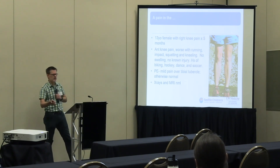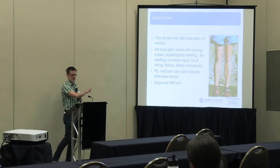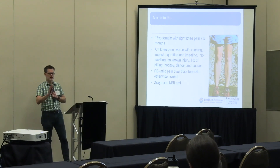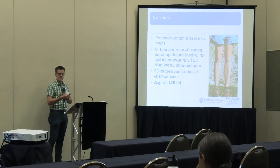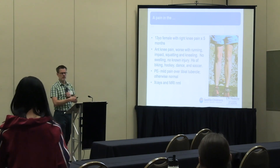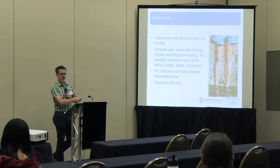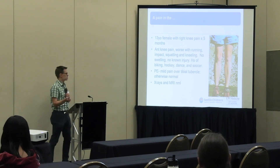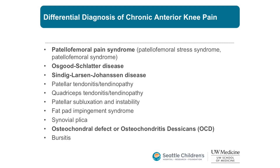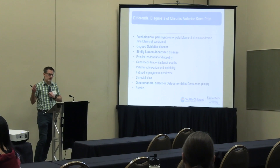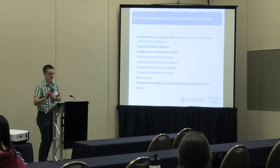A lot of the other apophysitis conditions I will often describe as 'the same thing as Osgood-Schlatter, just a different spot,' because so many people have heard of Osgood-Schlatter. X-rays and MRI in this case were normal — this definitely does not need an MRI. An MRI would be overtreatment here. The key with anterior insidious-onset knee pain is really where it is. Tell me it's directly over the tibial tubercle and that's Osgood-Schlatter.